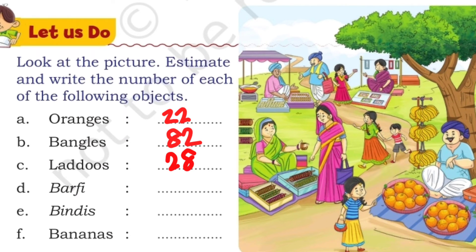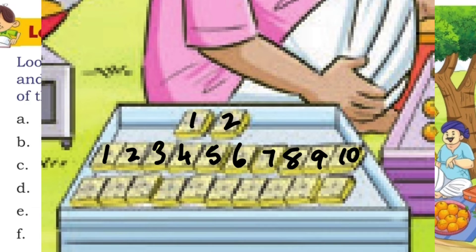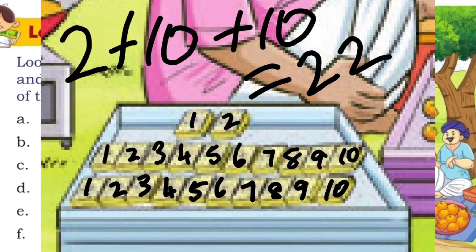On the next one — the barfi — we have 10 on the bottom row and 10 in the middle row. On the top row there are 2. So 2 plus 10 plus 10 is 22 barfi.